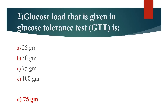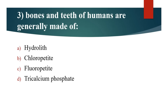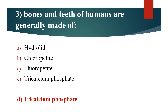Third question: Bones and teeth of humans are generally made of? Option A: Hydrolith. Option B: Chloropatite. Option C: Fluoropatite. Option D: Tricalcium phosphate. Answer is Option D: Tricalcium phosphate.